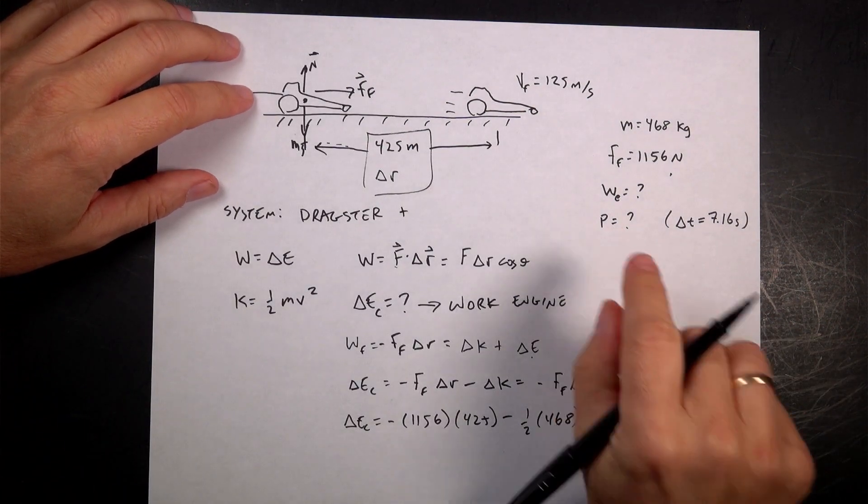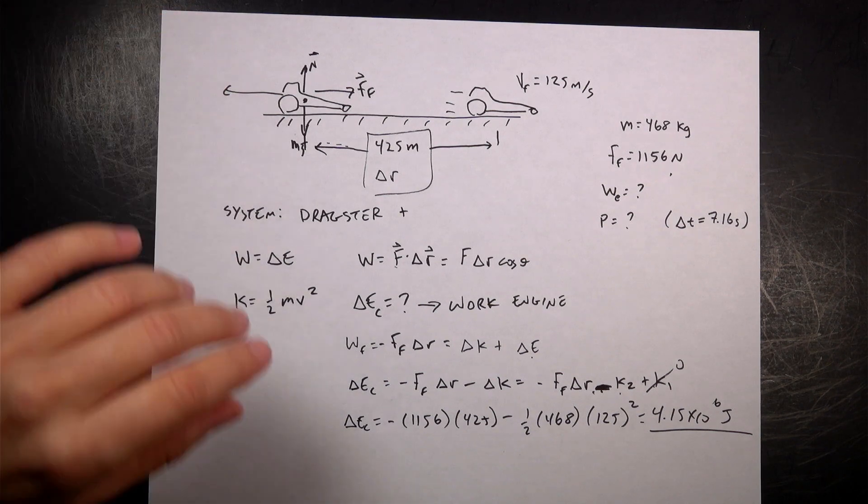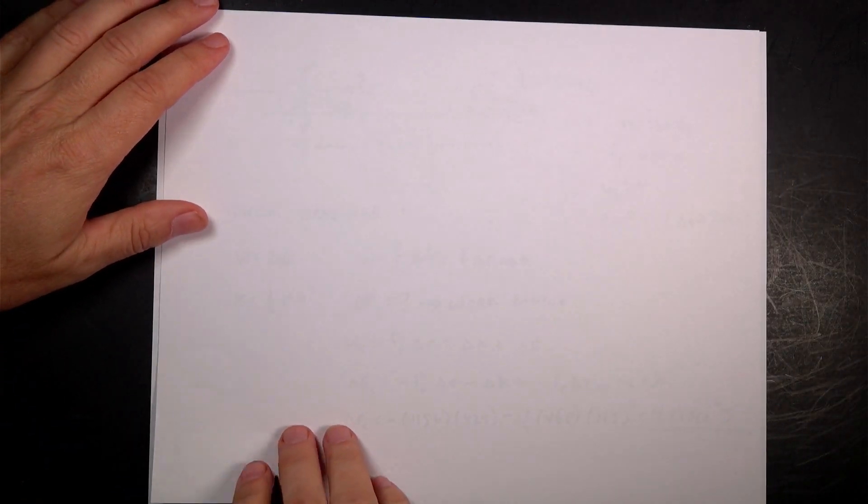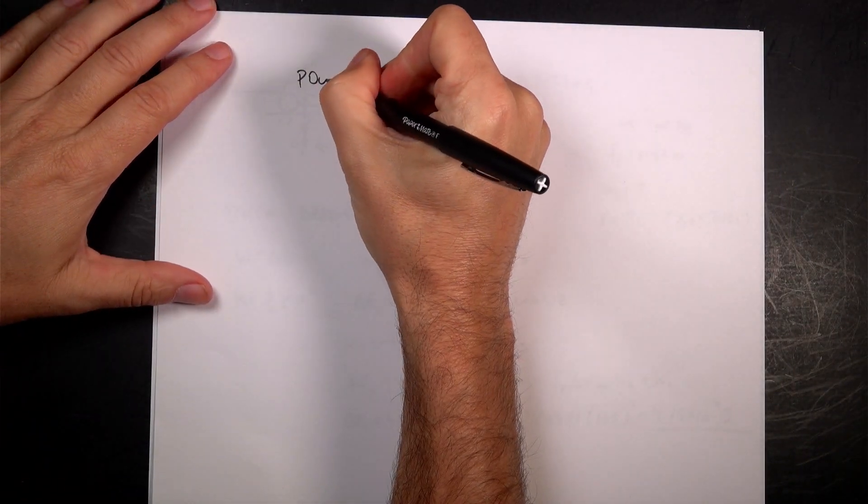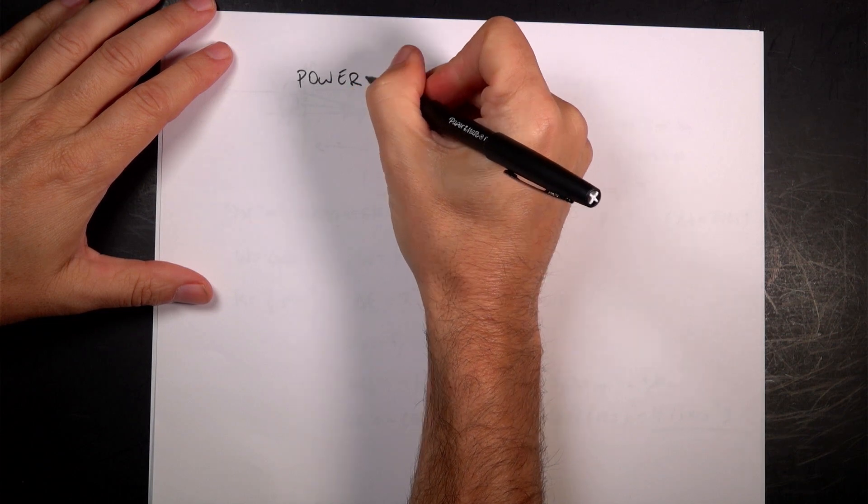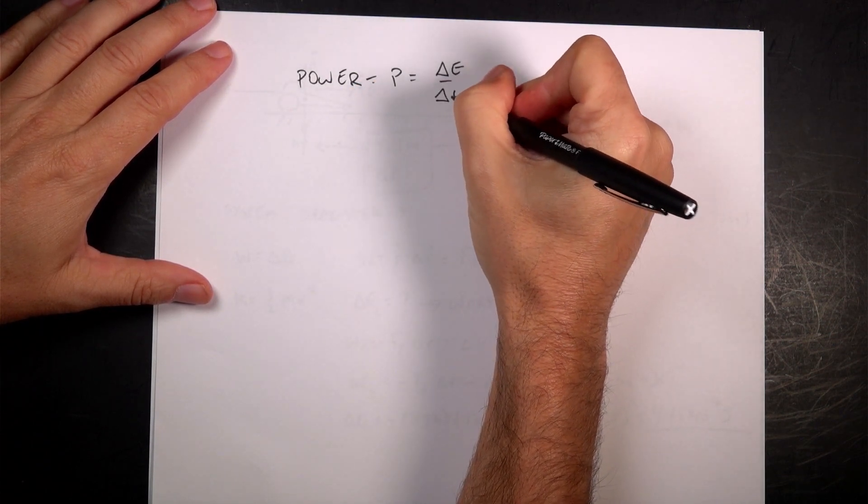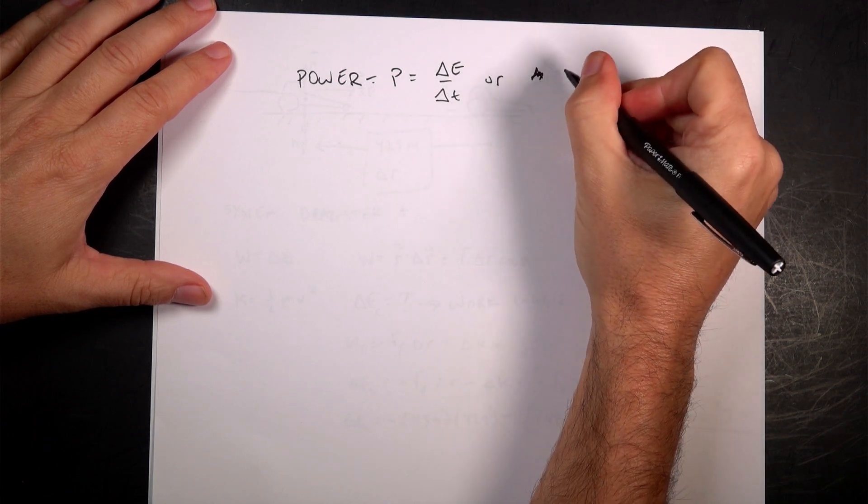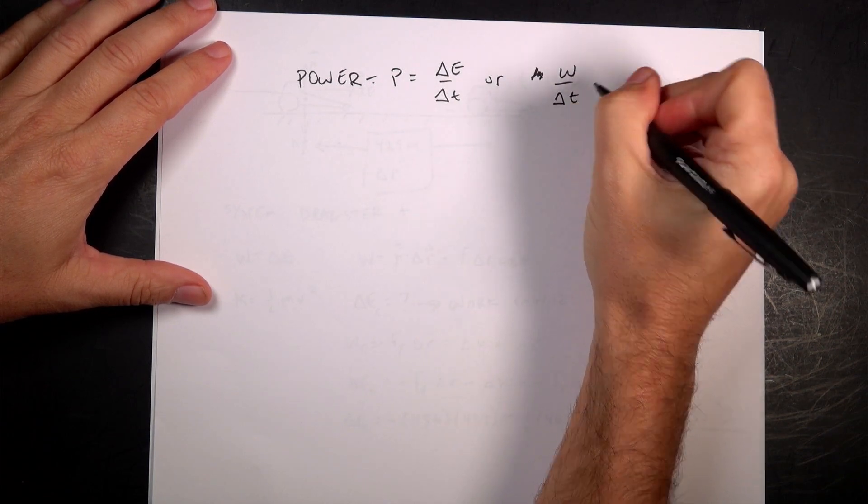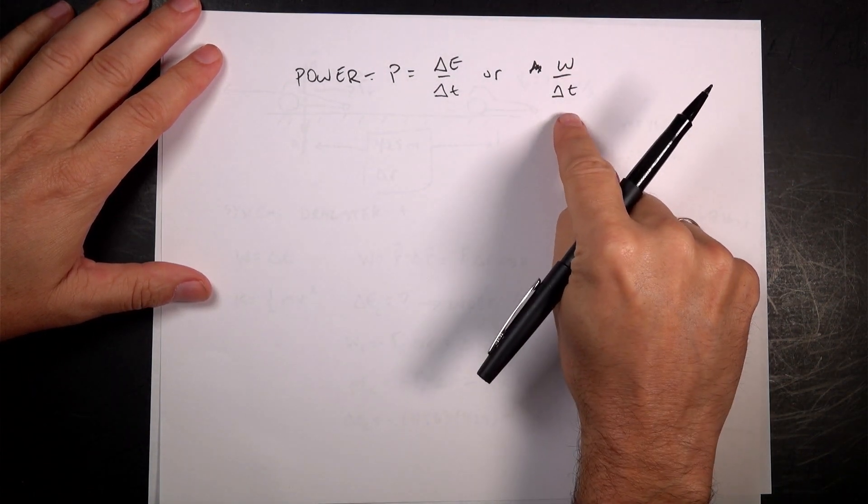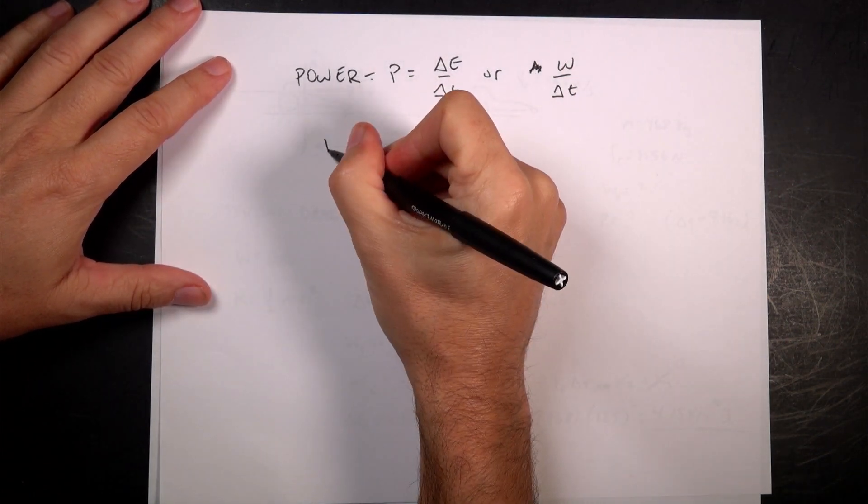Okay, now part B. I'm going to use different paper. So it says, what's the power output? This one's pretty easy because we define power as P equals delta E over delta T, or work over delta T. It's the rate that you change the energy. I just calculated the work done by that and they give me delta T, so I can just calculate the power.